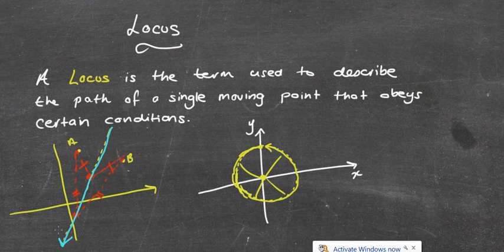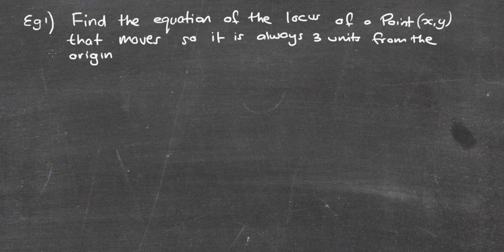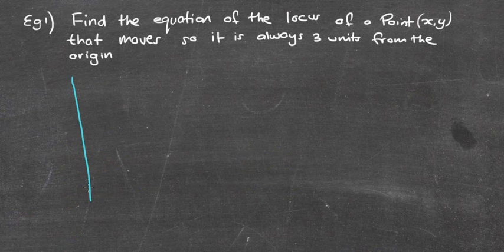You can have lots of different locuses — a parabola is a very good example of a locus as well, but it has a certain condition to meet. So let's look at a question: find the equation of the locus of a point P(x, y) that moves so that it is always three units from the origin.